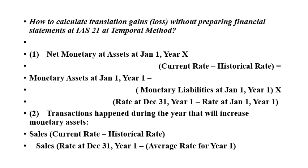All of these times the rate at December 31, year one, minus the rate at January 1st, year one. Note that all liabilities are monetary liabilities. Step two: transactions that happened during the year that increase monetary assets — sales times the current rate minus the historical rate, which is the rate at December 31, year one, minus the average rate for year one.